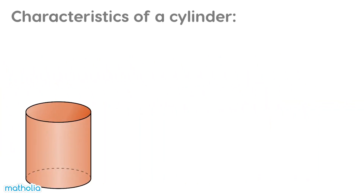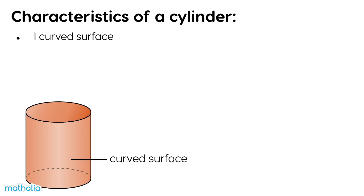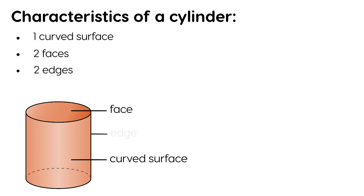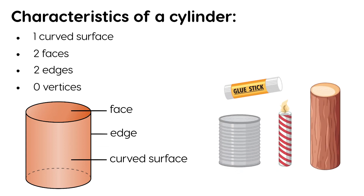What are the characteristics of a cylinder? It has one curved surface, two faces, two edges, and no vertices. Here are some cylinder-shaped objects.